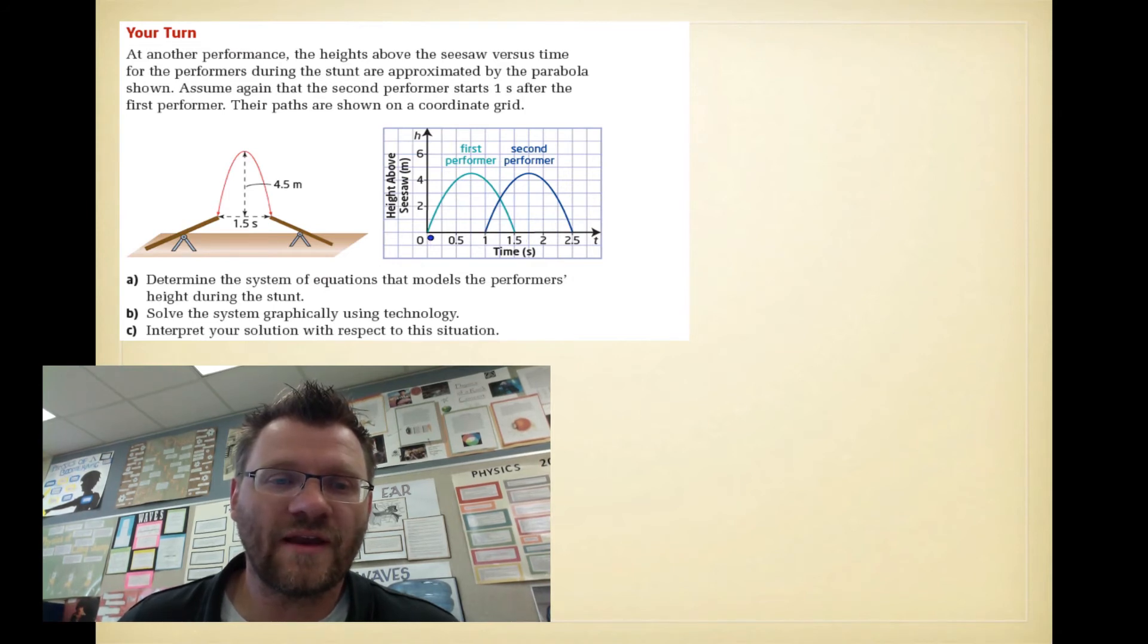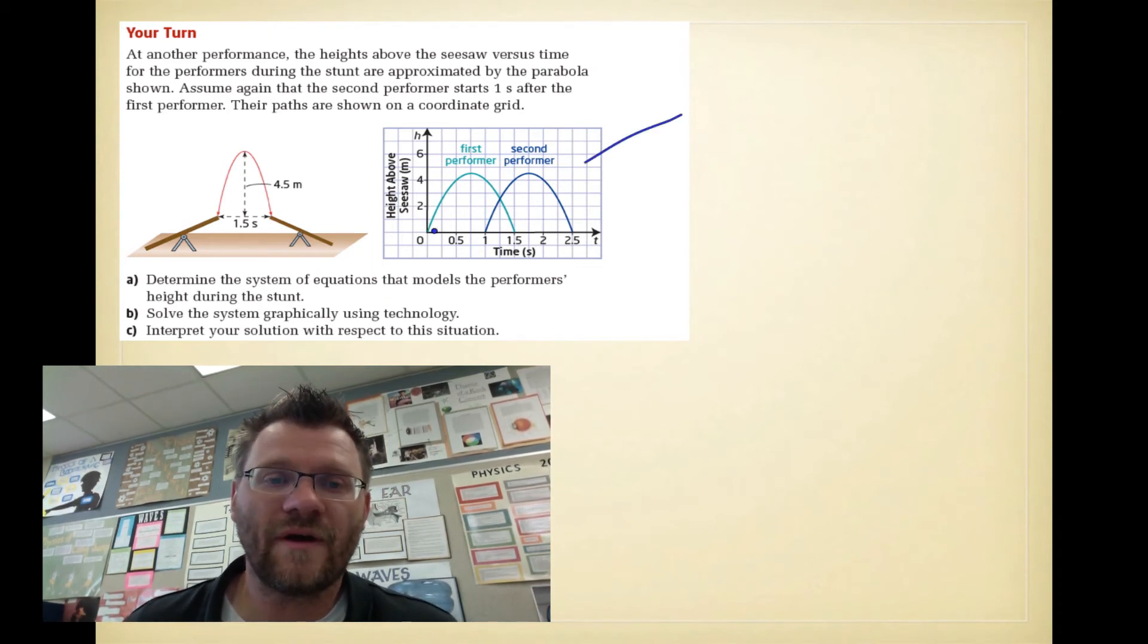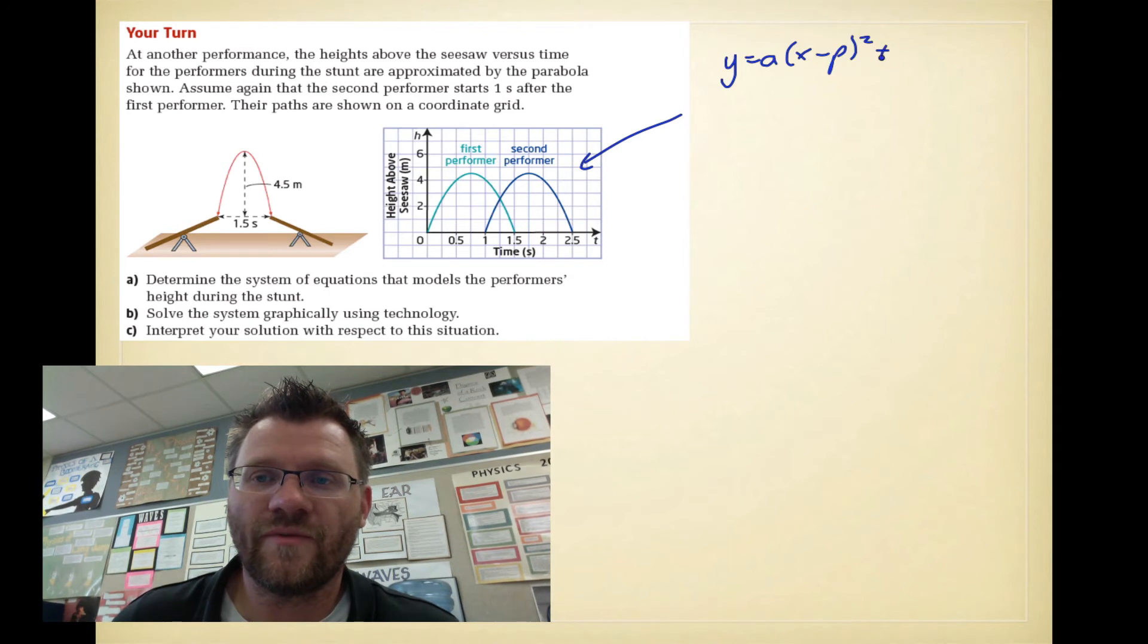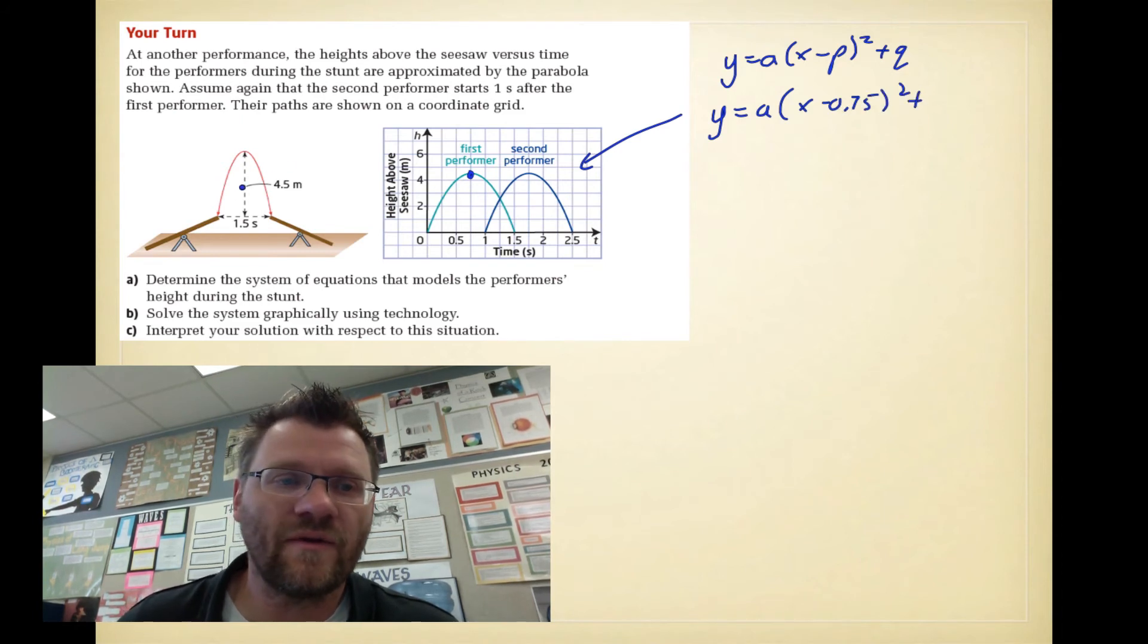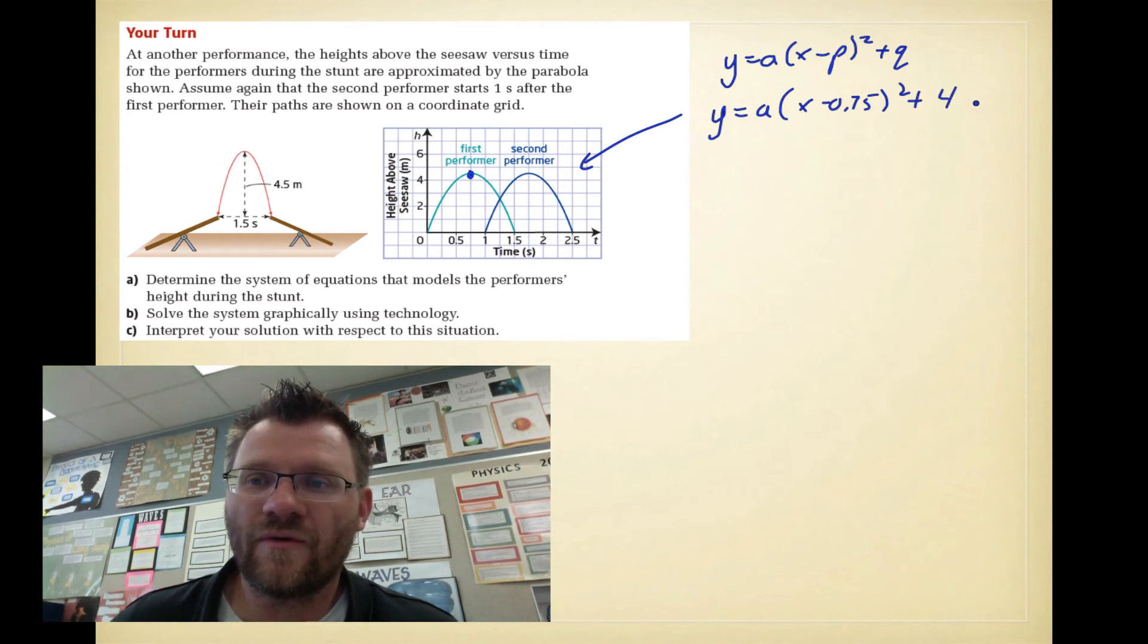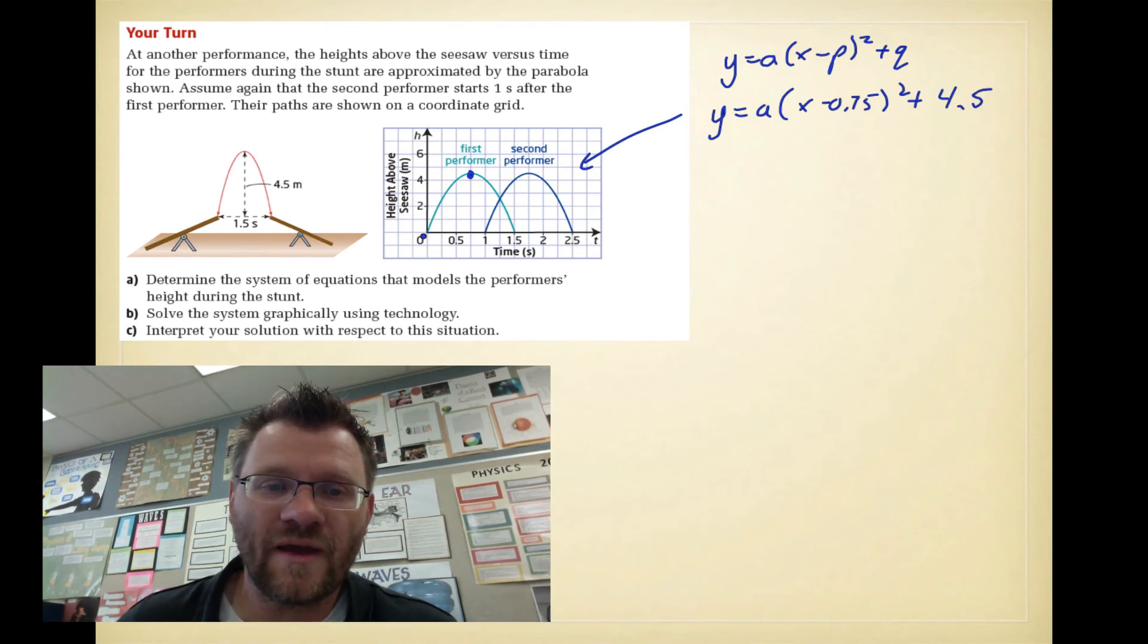The first performer, or second performer, definitely started one second after the first performer. So it says, determine the system of equations that models the performer's height during the stunt. We need to find the equation here. So the equation for both of these parabolas, we'll do the light blue parabola first. Remember that since it's a parabola, it follows y equals a(x minus p) squared plus q. And we can put the vertex in here. So the vertex of the first one is right here. Now it said that that is going up by 0.25 each of these squares. So that's x minus 0.75. And the height of that thing, well, it said reach the maximum height of 4.5. So that is going to be 4.5 right here.